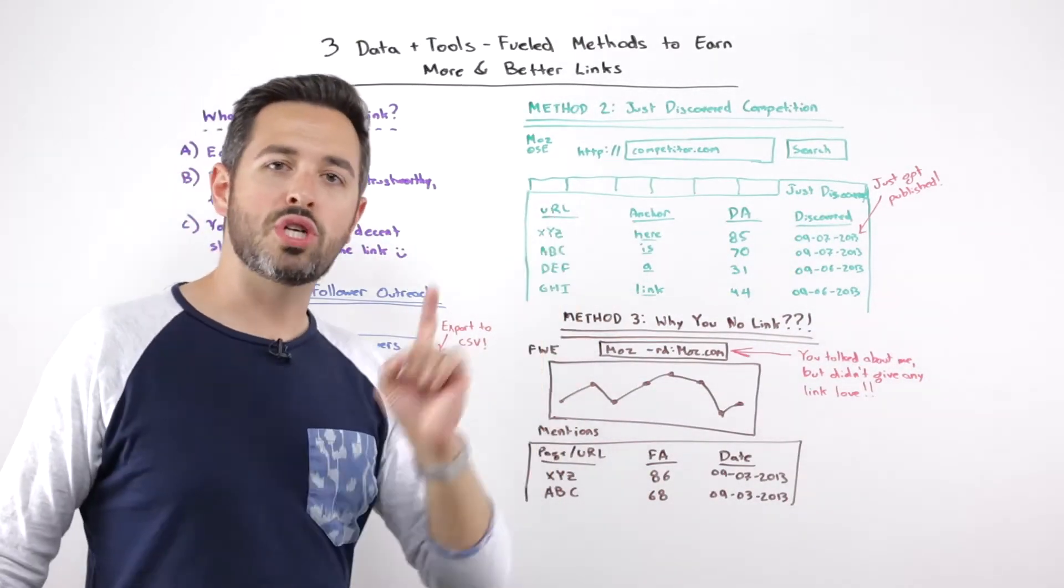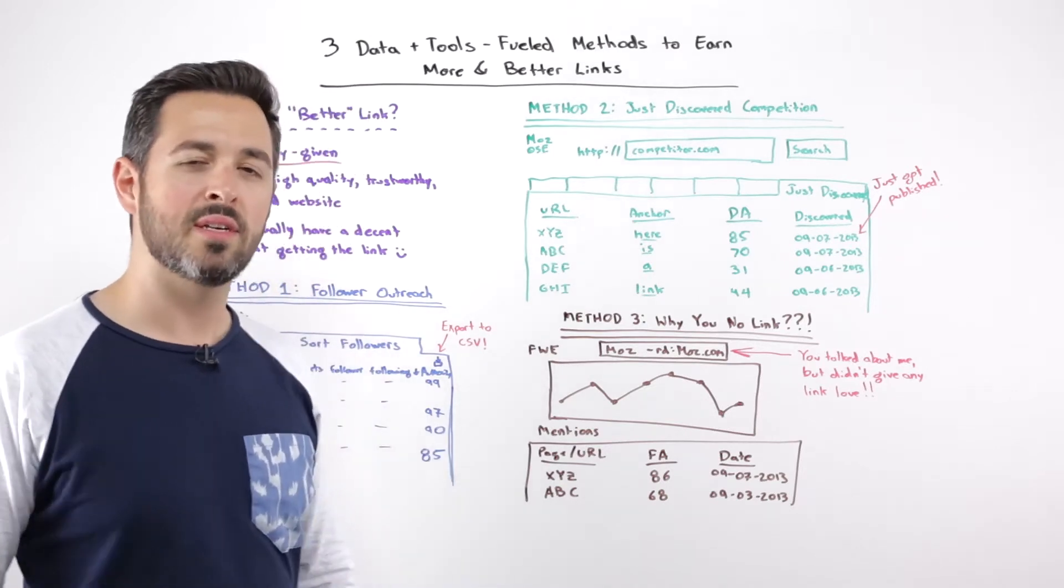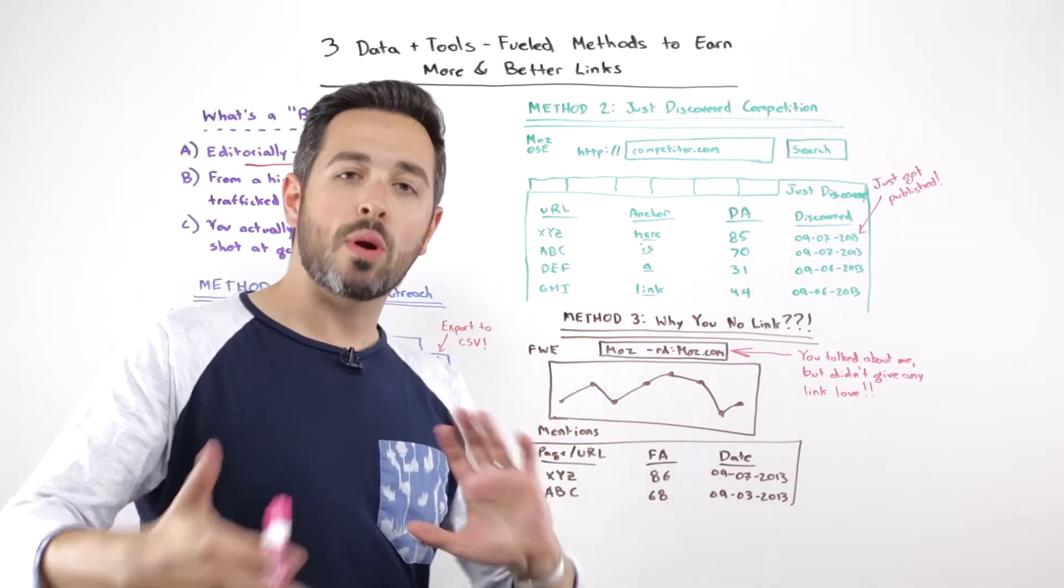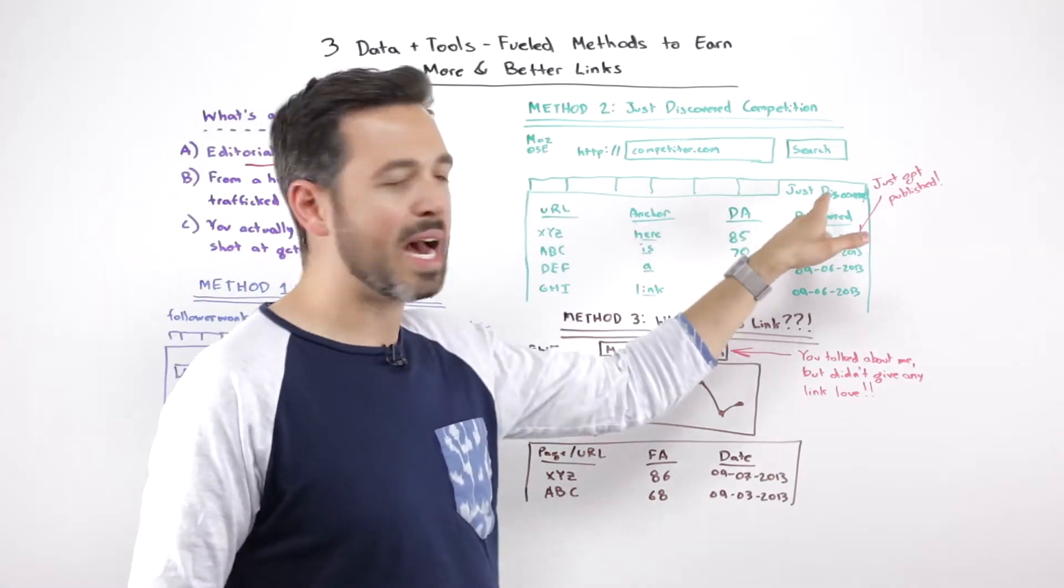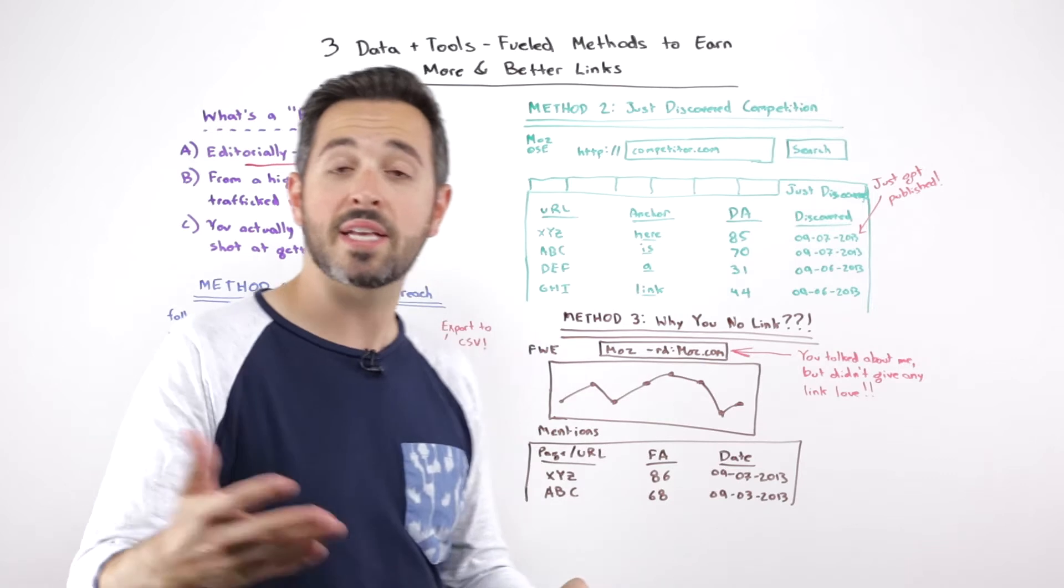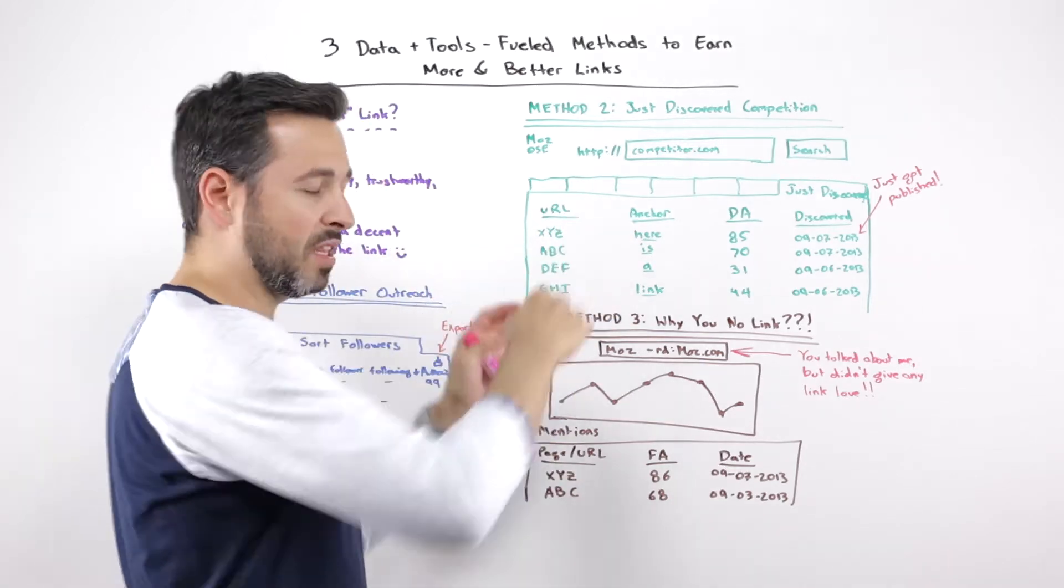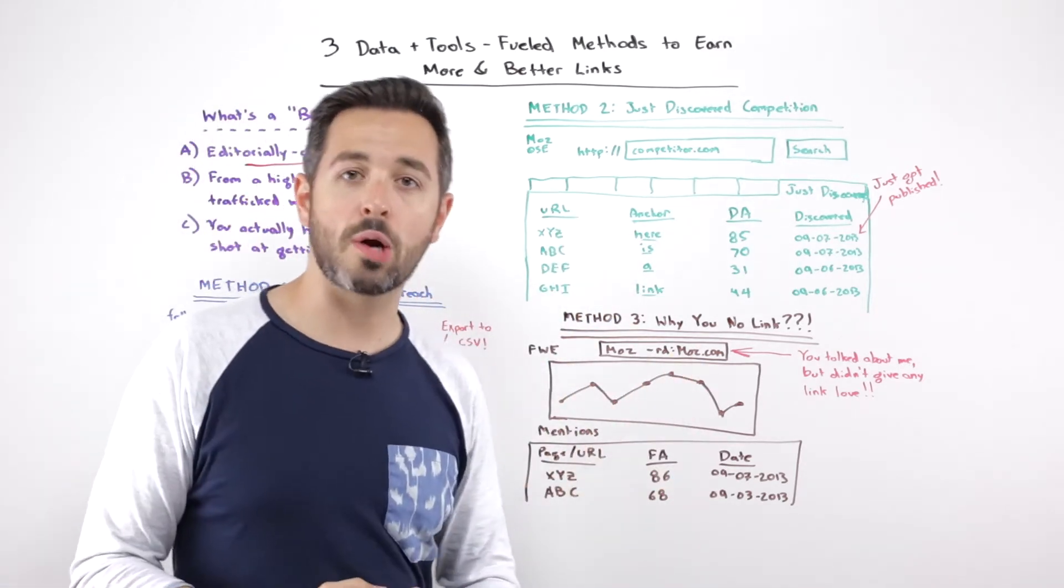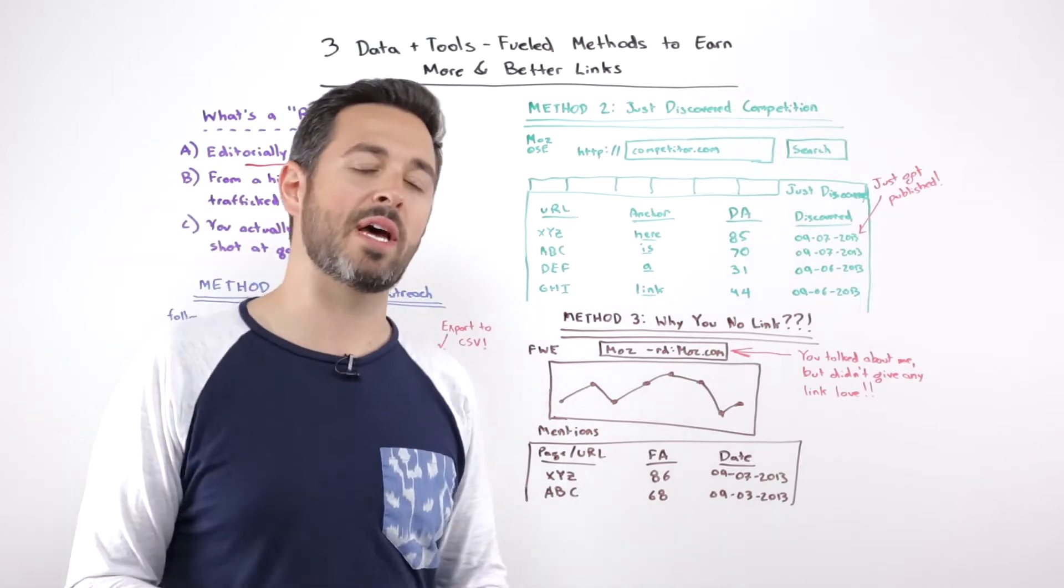Method two, just discovered competition. So many of you are probably already aware, but in Open Site Explorer, there's this new tab called just discovered links, way over on the right. It's technically in beta, but it gets a lot of great links. It surfaces a lot of great links that are pointing to your website or to a competitor's website.